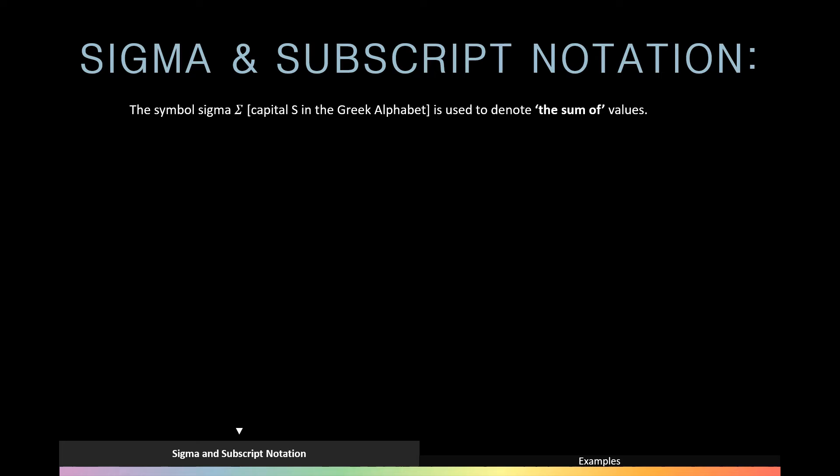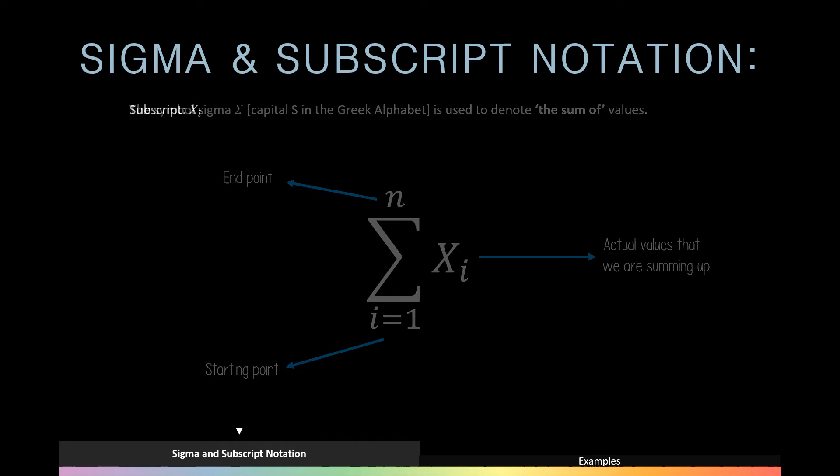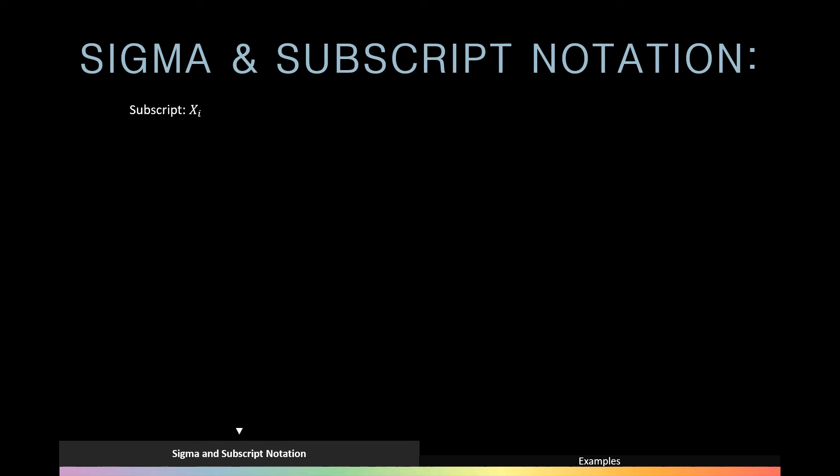Now typically we would read this as the summation of Xi from i is equal to 1 up until n, where Xi are the actual values that we're summing up, i is our starting point, and n is our end point. Now subscript Xi is simply used to distinguish between individual values where i is referring to the position or an index of a value.